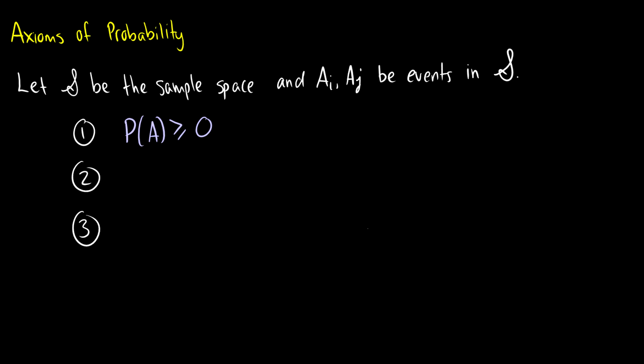The second axiom is that the probability of the sample space is going to be one, which correlates to being a 100 percent chance that if something happens it's in the realm of all possibilities. So if you flip a coin you can't have a seven show up — it doesn't make any sense.